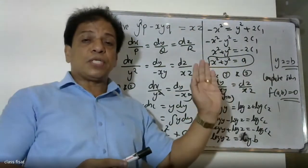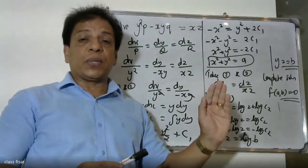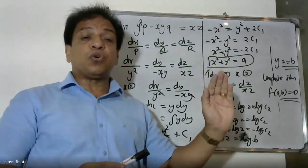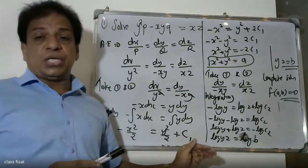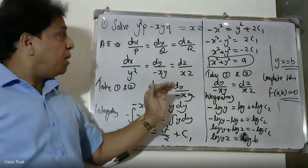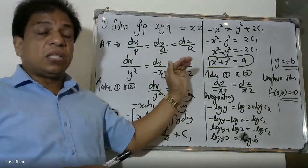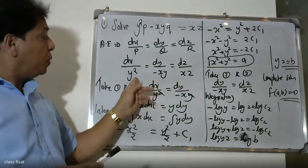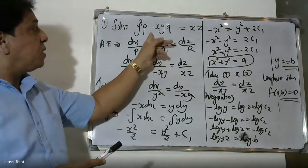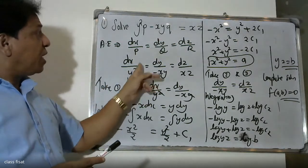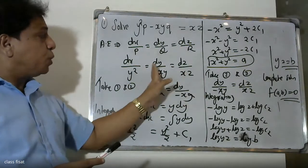Now recapping: capital P, capital Q, capital R are functions of x, y, z. The auxiliary equations are dx by P, dy by Q, and dz by R. For our problem y²p minus xyq equals x, we identify P is y², Q is minus xy, and R is x. There are three ratios.